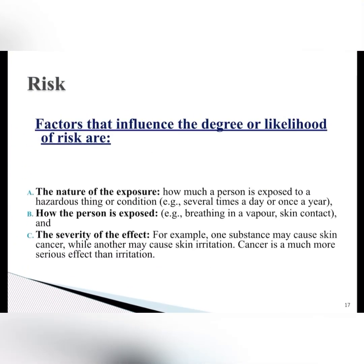Now we will discuss the factors that influence the degree or likelihood of risk. The first factor is the nature of the exposure — how much a person is exposed to a hazardous thing or condition, for example several times a day or once a year. The second factor is how the person is exposed, for example breathing in a vapor or skin contact. The third factor is the severity of the effect — for example, one substance may cause skin cancer while another may cause skin irritation. Cancer is a much more serious effect than irritation.